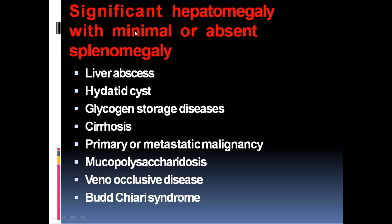Significant hepatomegaly with minimal or absent splenomegaly — causes include liver abscess (usually will not cause changes in spleen), hydatid cyst, glycogen storage disease (may have minimal splenomegaly), cirrhosis (can have splenomegaly in portal hypertension but not directly), primary or metastatic malignancy, mucopolysaccharidosis, veno-occlusive disease, and Budd-Chiari syndrome. All these cause predominantly hepatomegaly with minimal or absent splenomegaly.